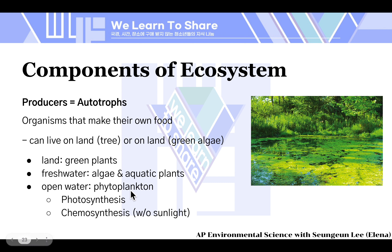Producers make food by a process called photosynthesis, where they use sunlight. They can also make food through a process named chemosynthesis, which specialized bacteria can utilize to make their own food without sunlight.